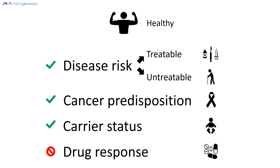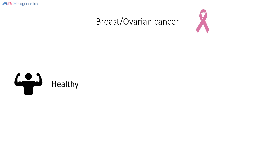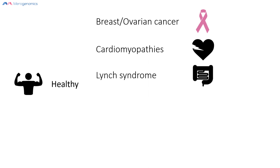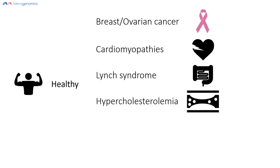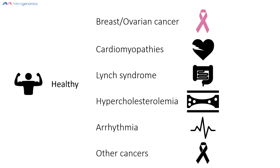How frequently could a presumed healthy individual discover a chance of disease development? Based on available data from screening thousands of individuals in different health programs, we know this risk runs somewhere between one and ten percent. On average, a presumed healthy individual undergoing full genome sequencing has about a five percent chance of discovering information related to some disease condition. The most frequently discovered risk is for breast and ovarian cancer, followed by heart problems, colon cancer, high cholesterol, arrhythmia, and other cancers.